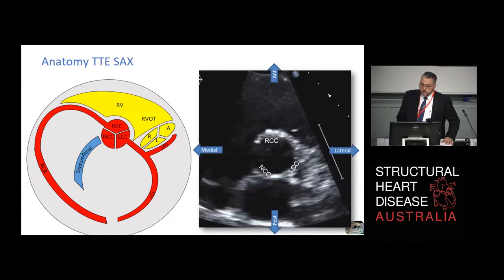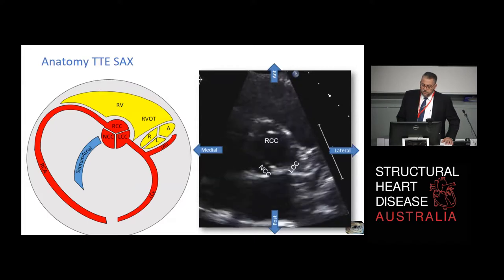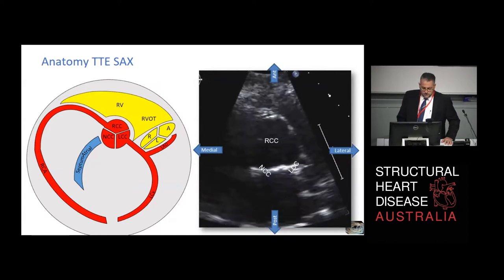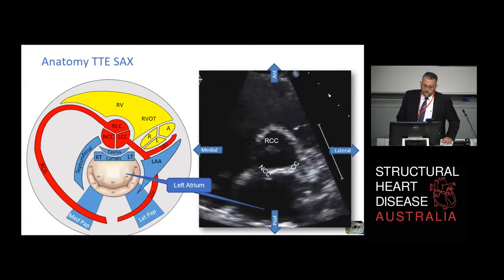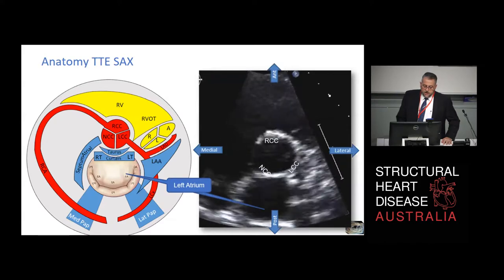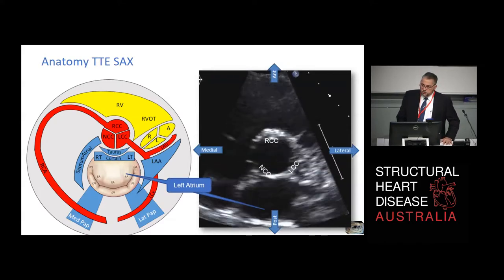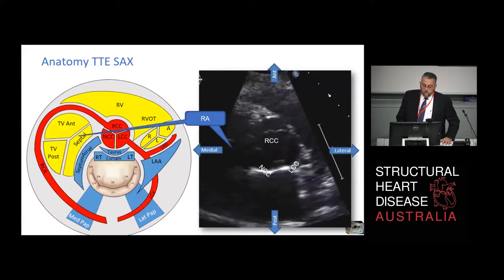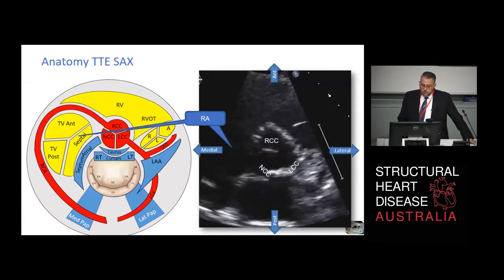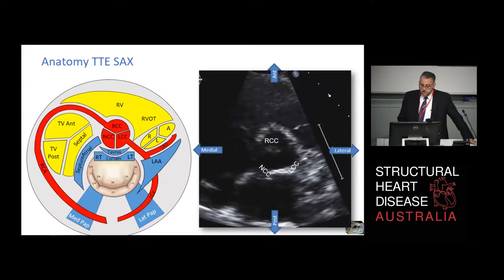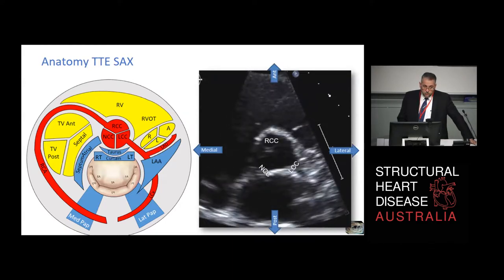When you see an aortic leaflet near the atrial septum, it's always the non-coronary cusp. The non-coronary cusp straddles the atrial septum as a very important anterior landmark, because when we start to put in devices we'll often be nestling them into the aortic root at the non-coronary cusp. To the lateral of the atrial septum is all of LA, the mitral valve, and the left atrial appendage. P3 of the mitral valve is near to the atrial septum. Depending on how you pivot this picture, you will bring in the septal leaflet of the tricuspid valve.